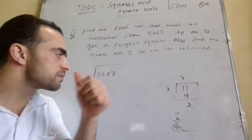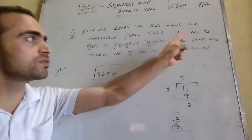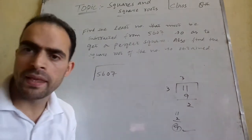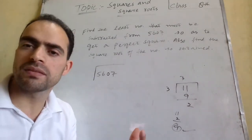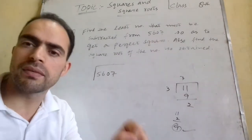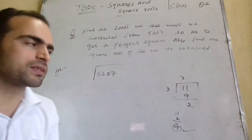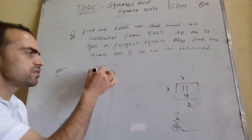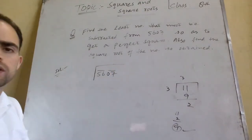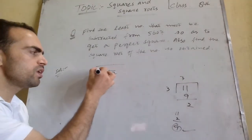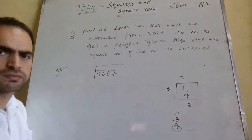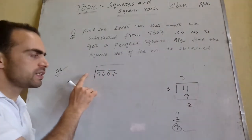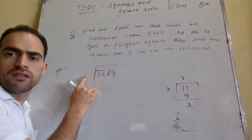The method to use is the long division method. Draw bars over each pair of digits from right to left. You know the procedure — draw a bar on the first pair and the next pair.